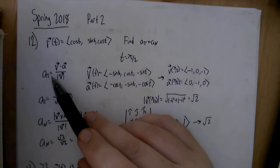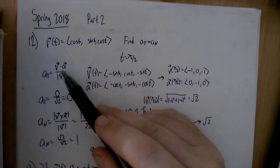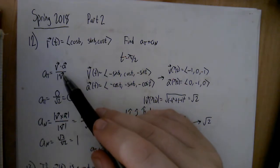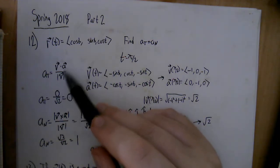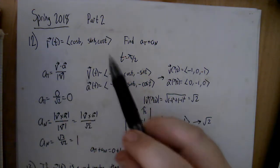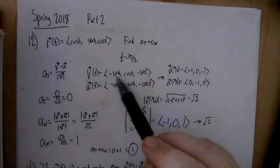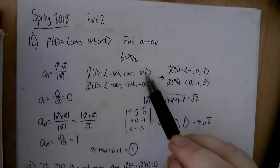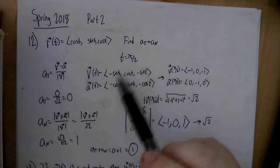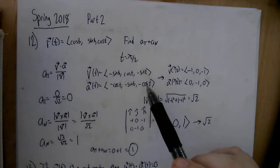The formula for the tangential acceleration is v dot a over v, which is the scalar projection of a onto v. To do this, we need the velocity and acceleration. Taking derivatives: the derivative of cosine, sine, cosine gives negative sine, cosine, negative sine. Then the second derivative gives negative cosine, negative sine, negative cosine.